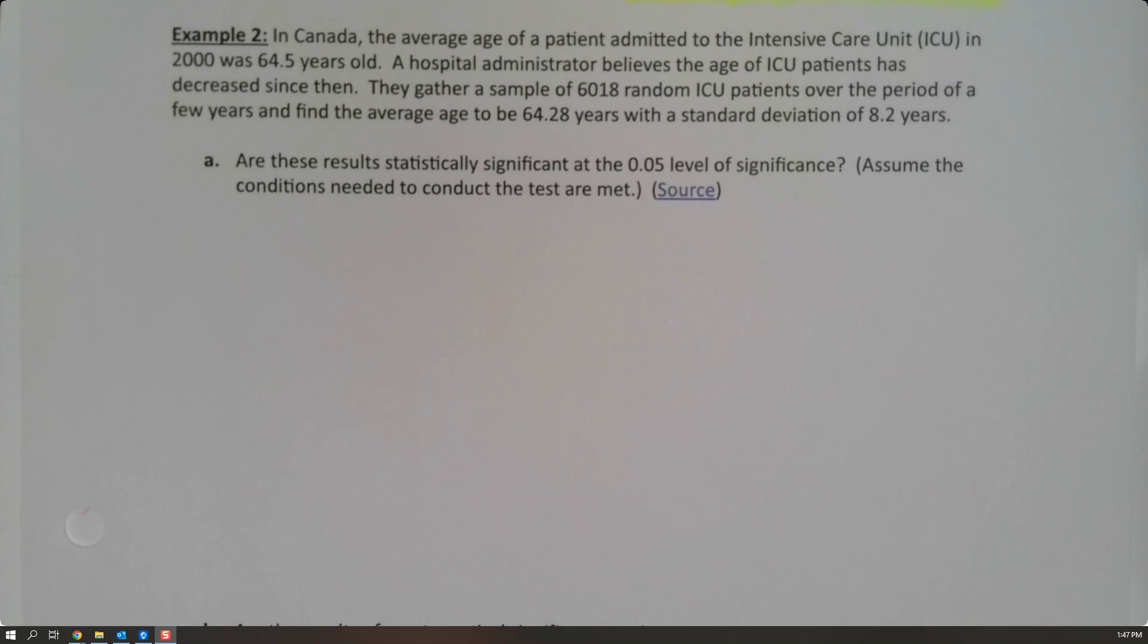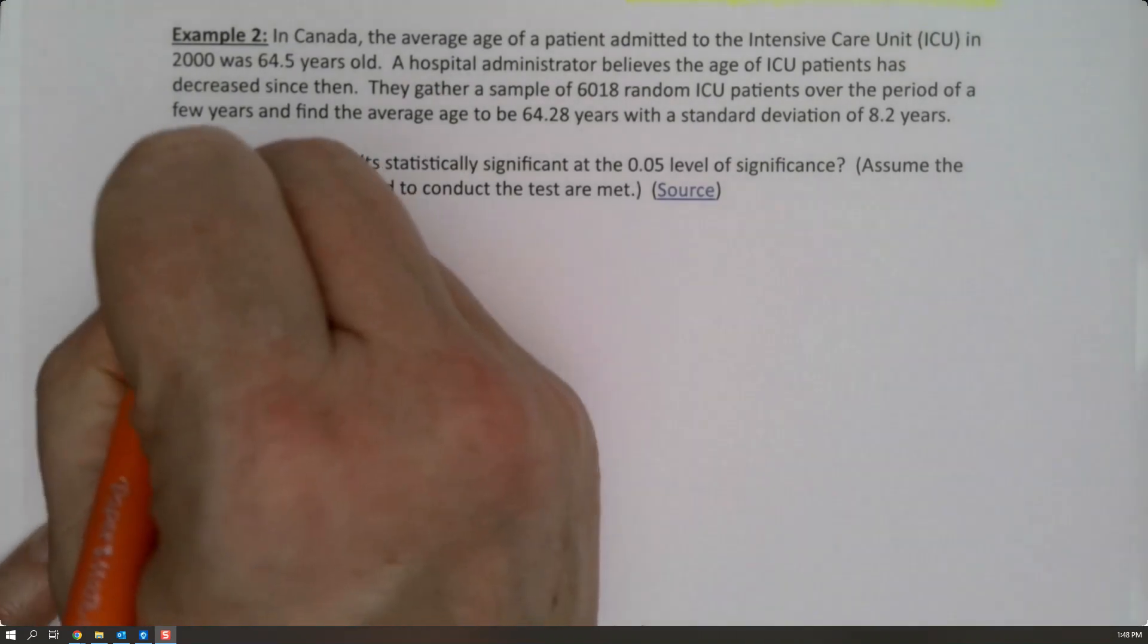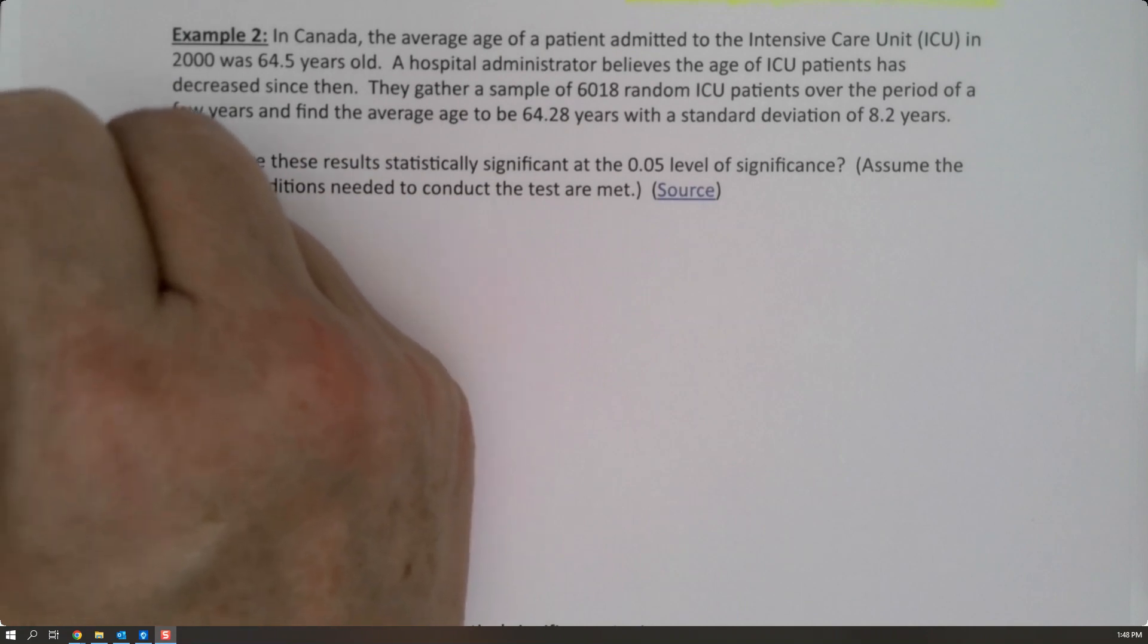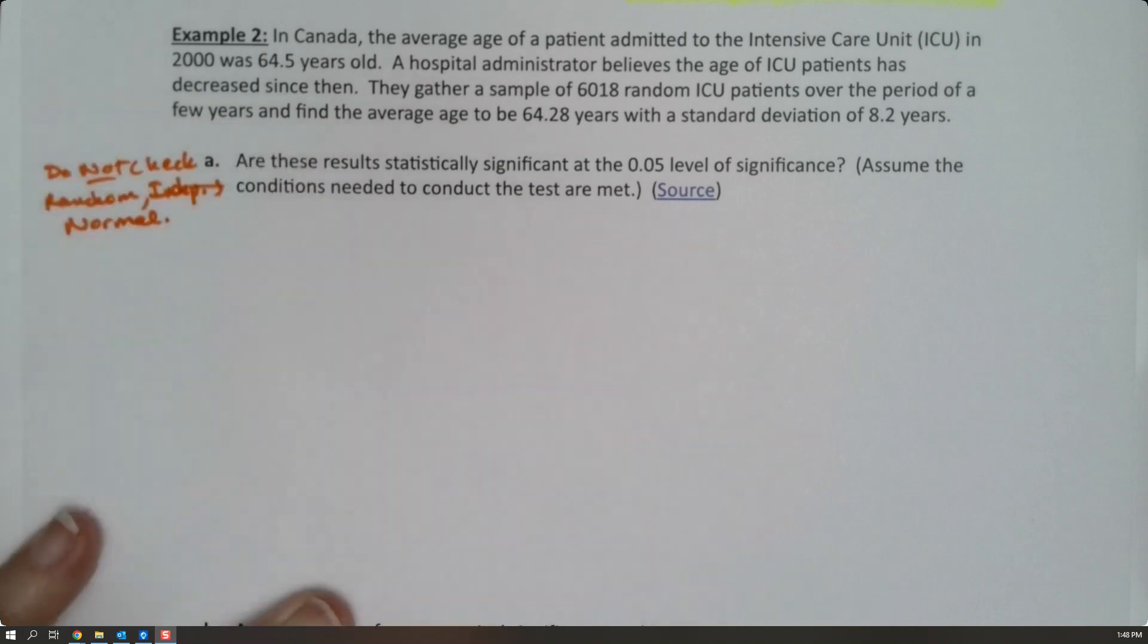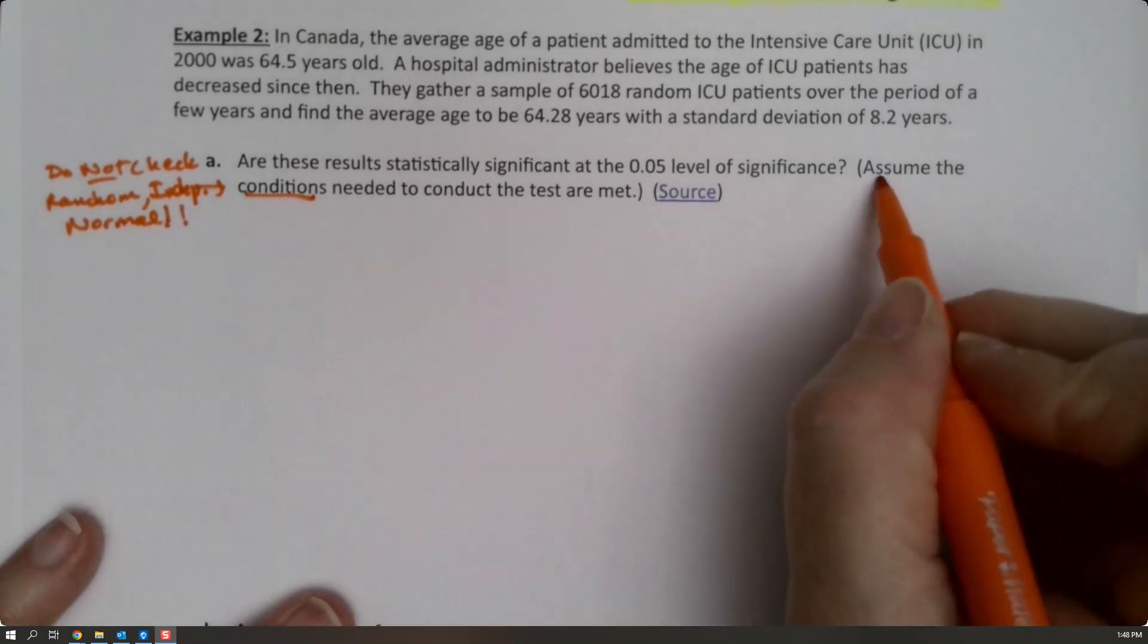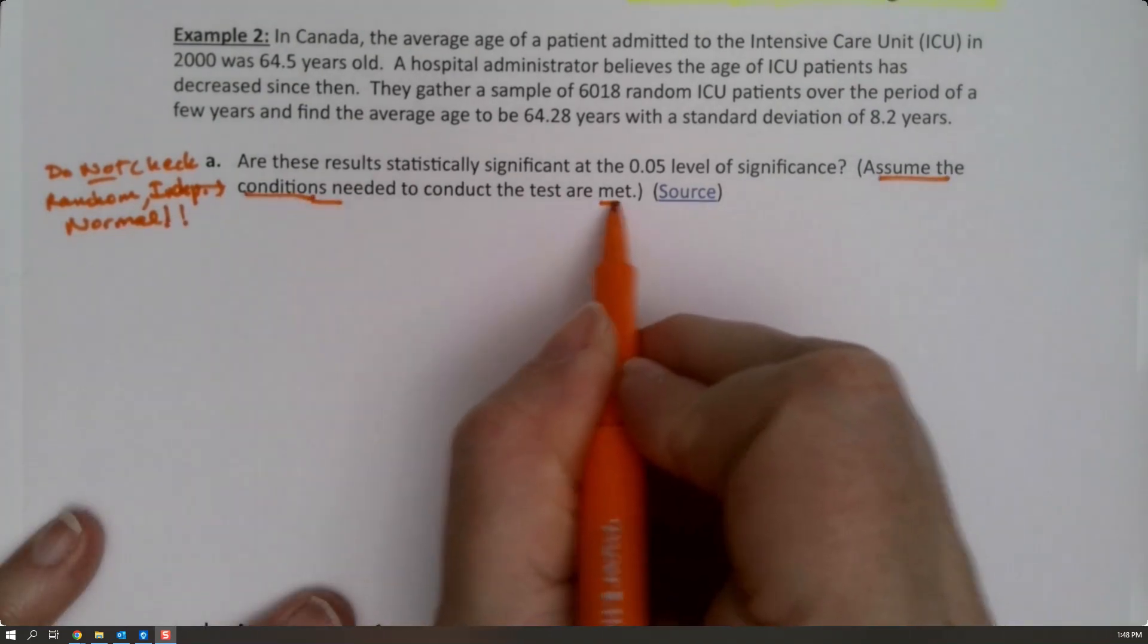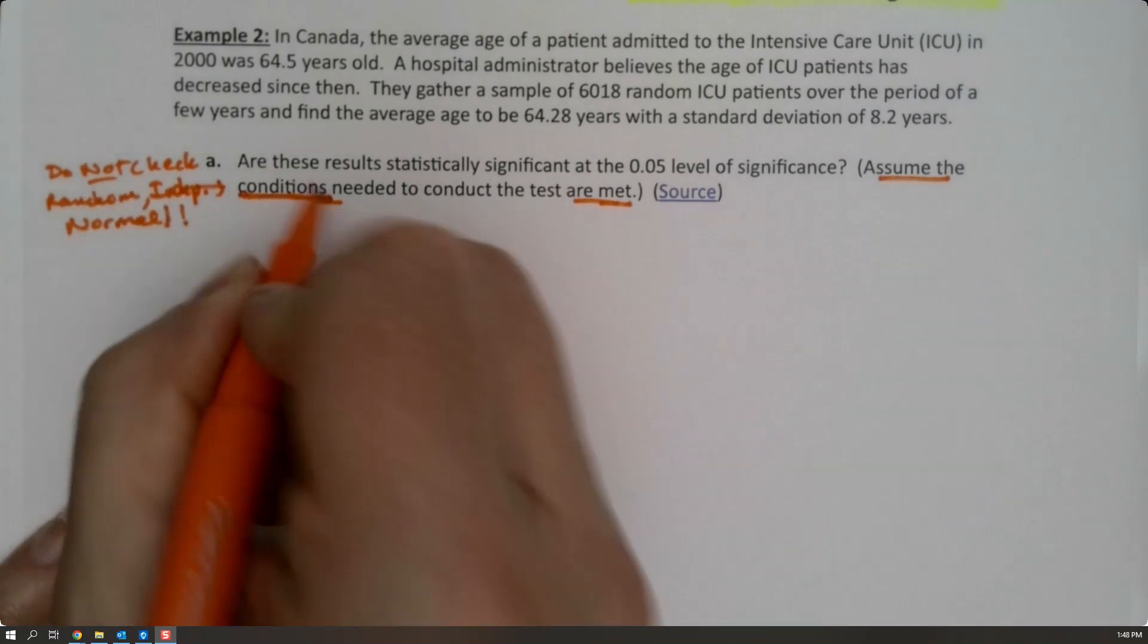The first thing we want to ask is, are these results statistically significant at the 0.05 level? Assume the conditions needed to conduct the test are met. That means that we don't have to check random, independent, normal. As I said in an earlier video, we only check those if it's asked for. Since it's assuming the conditions are met, we don't have to do it.